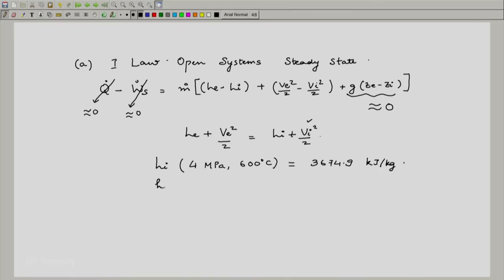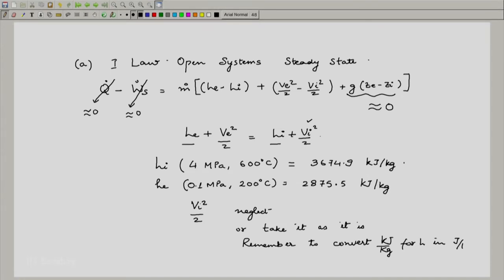What about h e that is at 1 bar or this is 0.1 megapascal and 200 degree centigrade. Even this can be read out. You realize that you have this quantity and this quantity the h, v i squared by 2 you could as well neglect or take it as it is and you should remember to convert kilojoule per kg for h in joule per kg. You have all quantities except v e squared by 2 and that can be now calculated. You can calculate v e squared by 2 by either assuming v i is 0 or the very small velocity that has been given. You will only get a negligible difference at probably the first or second decimal place. This is something that you must do.